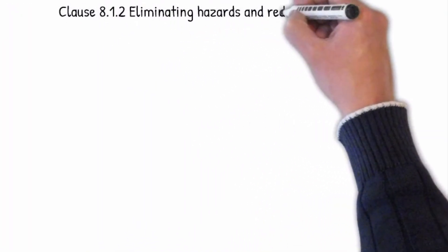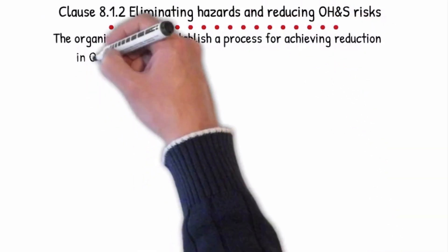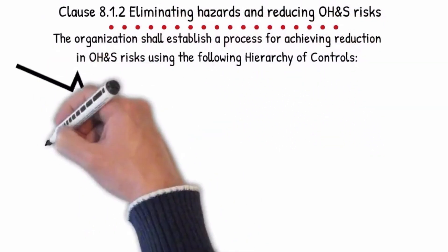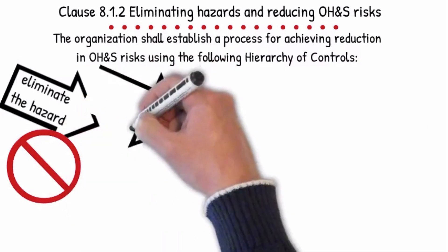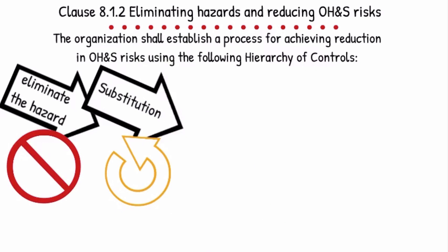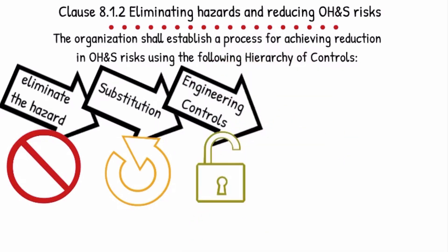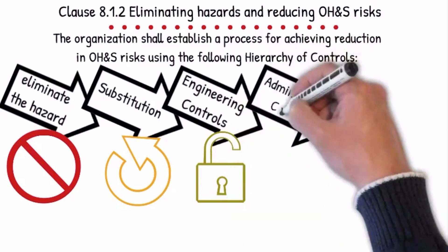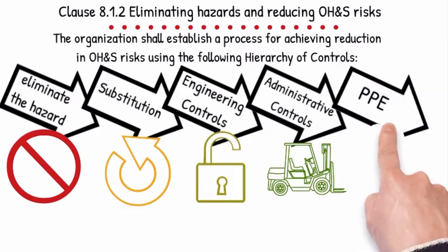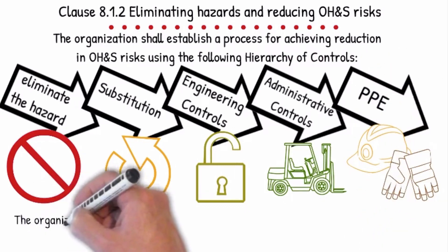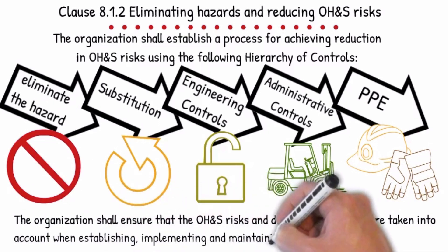Clause 8.1.2 — Eliminating hazards and reducing OH&S risks. The organization shall establish a process for achieving reduction in OH&S risks using the following hierarchy: eliminating the hazard by removing it or selecting alternate products or equipment; substituting the hazard by replacing the substance, method or material; using engineering controls to modify or replace existing machinery or provide a physical solution; implementing administrative procedures by developing work methods and training staff; and using personal protective equipment and training in its use. The organization shall ensure that OH&S risks and determined controls are taken into account when establishing, implementing and maintaining its OH&S management system.